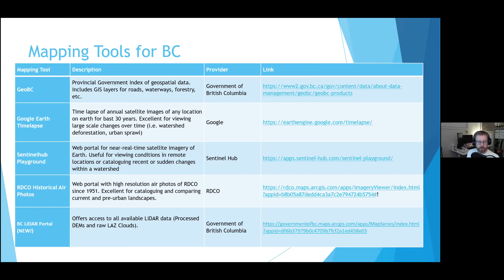Google Earth Time Lapse has been around for a little while and is super useful for visualizing change in a watershed. Sentinel Hub Playground is a newer tool that uses near real-time satellite imagery. Whereas Google Maps shows you an image from an unknown date, Sentinel Hub tells you when the image was taken — usually updated a couple of times a week for any point in the world — so you can see what's going on almost in real time and go back and forth over time.